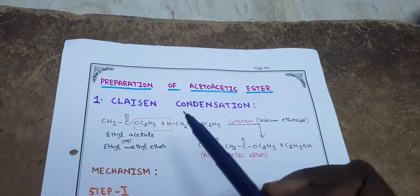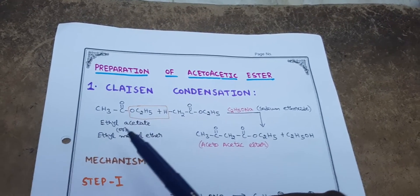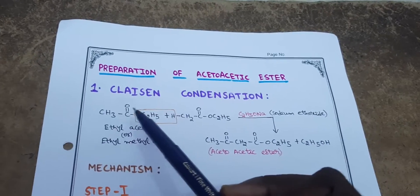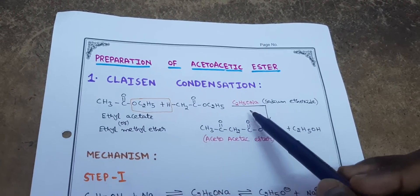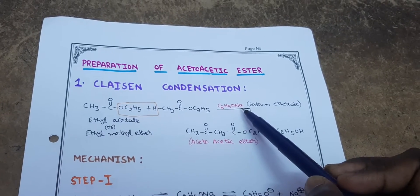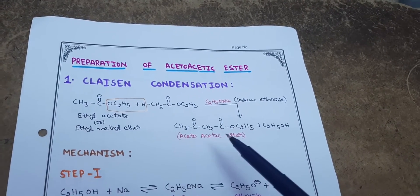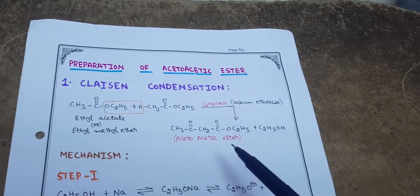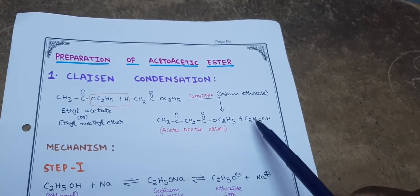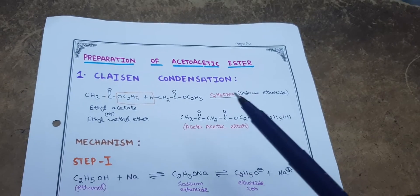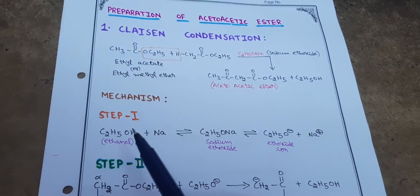In this reaction, the reactants are two moles of ethyl acetate (ethyl methyl ether). When both moles are reacted in the presence of sodium ethoxide (C2H5ONa), a product known as acetoacetic ester is formed. Along with it, one mole of ethyl alcohol (ethanol) is formed as the byproduct of this reaction. Now let's see the mechanism of acetoacetic ester preparation.